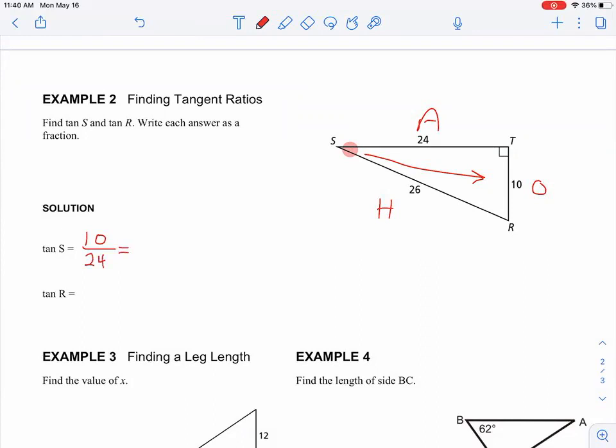It's opposite side over adjacent side. Then we'll reduce that. Let's see. They're both even, right? So that's going to be 5 over 12.